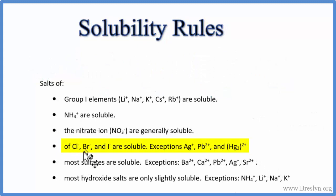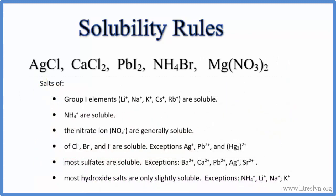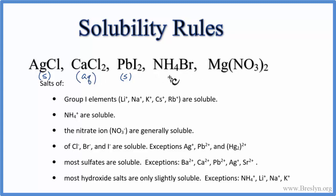For rule four, Cl-, Br-, and I- are usually soluble. These are called the halogens, or sometimes the halides. There are a few exceptions: Ag+ and Pb2+ will be insoluble. On the periodic table, the halides are fluorine, chlorine, bromine, and iodine. Pause and give these a try. AgCl is a solid and PbI2 is insoluble. But the other halides — Cl and Br — should be aqueous and soluble. The compound with the ammonium ion is also soluble. And magnesium nitrate: remember, nitrates are almost always soluble, so we put Aq after that.